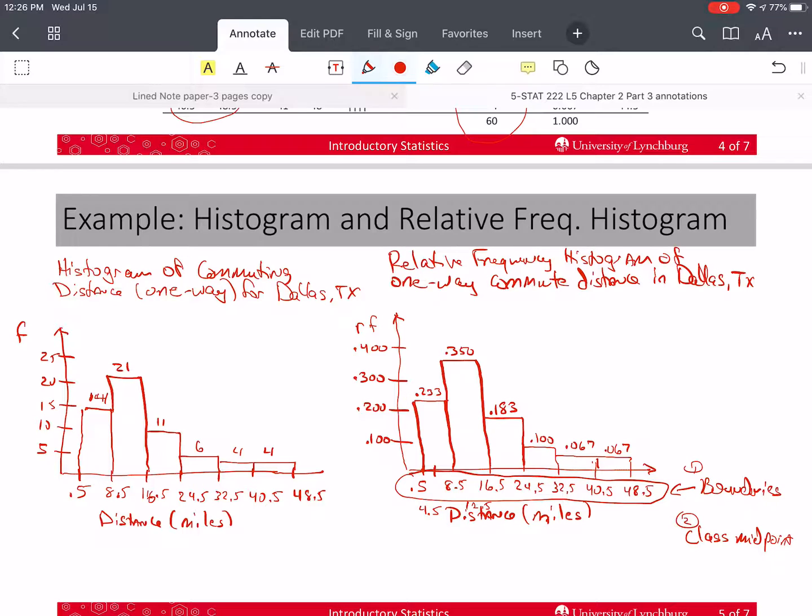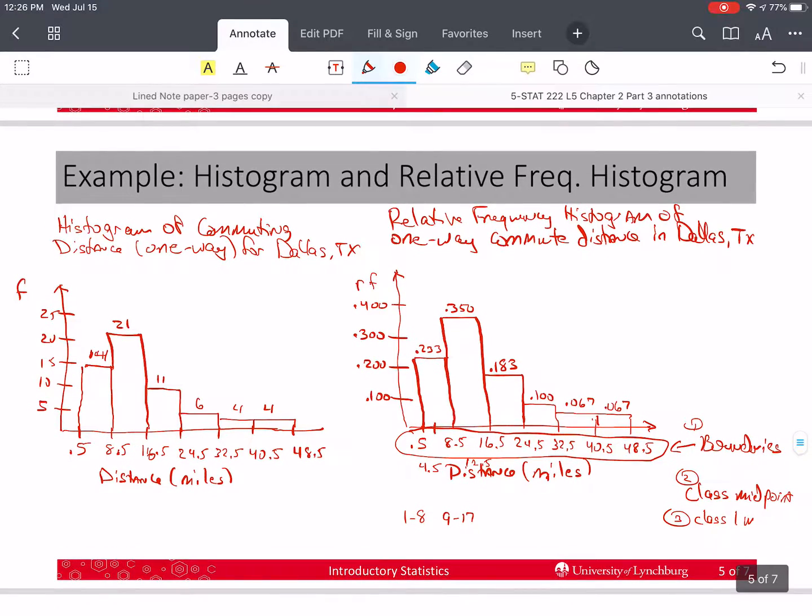The third way you could do this is to just use the classes themselves. So I could say 1 to 8, 9 to 17, and so forth. So these are the class limits.